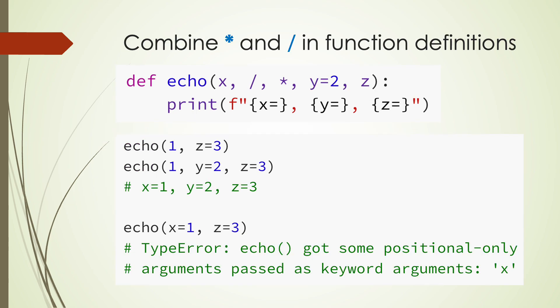We can also combine star and slash to define a function with some arguments being positional only and some keyword only. In this case, x is positional only and y and z are keyword only. The arguments must be passed accordingly to avoid type errors.